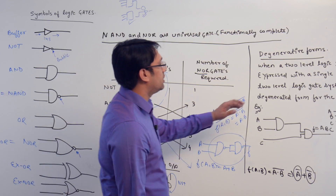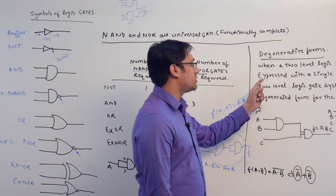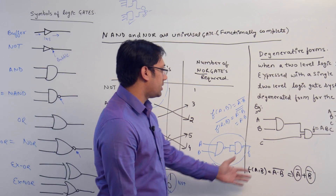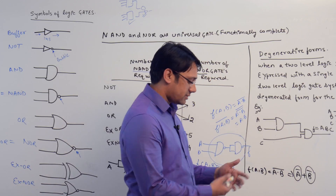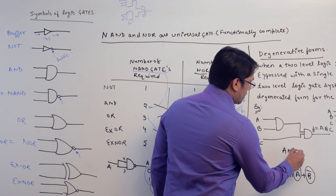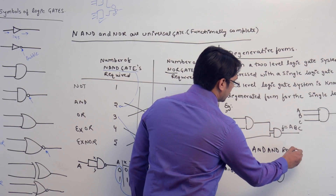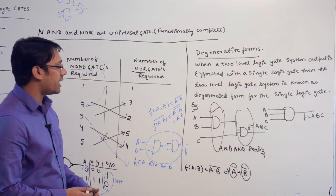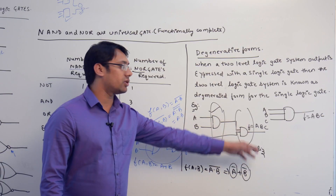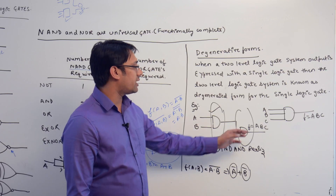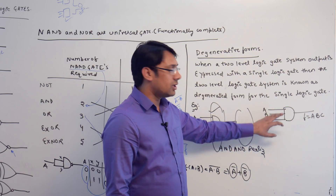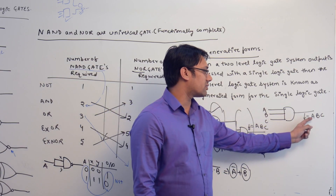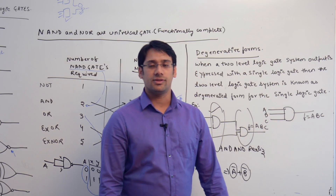Next is the degenerative form. When a two-level logic gate system output is expressed with a single logic gate, the two-level system is known as a degenerative form. For example, an AND-AND realization uses AND gates at the first level and AND gates at the next level, representing the function F = A·B·C. You can represent the same function using a single AND gate with three inputs — this AND gate is the degenerative form of that two-level circuit.